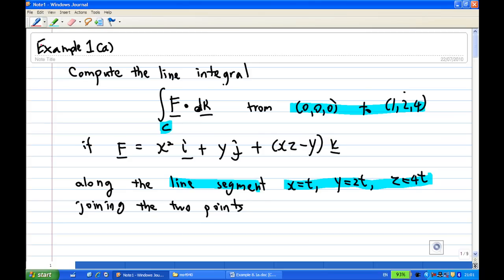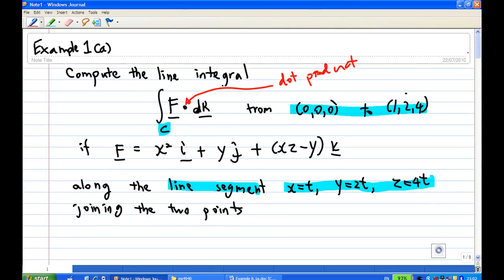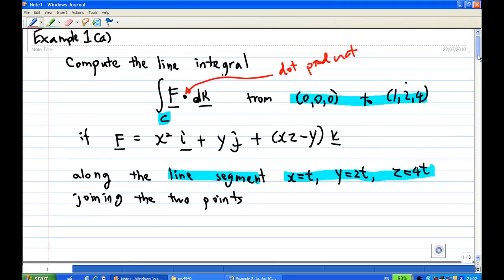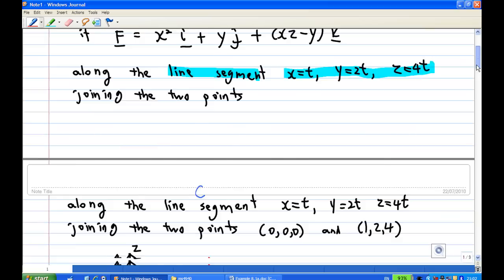And in particular, just recall that this dot here is a dot product or scalar product. So first we understand what is the path, the path joining (0,0,0) to (1,2,4) by a straight line.